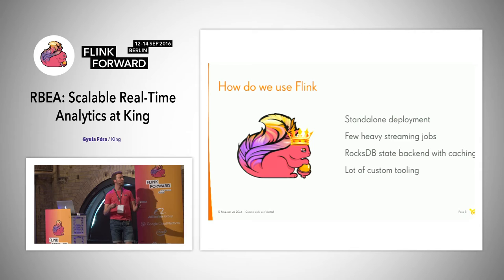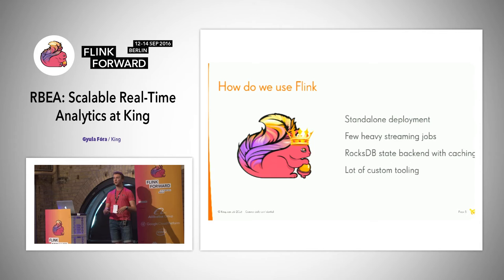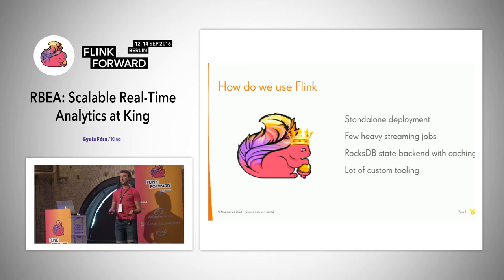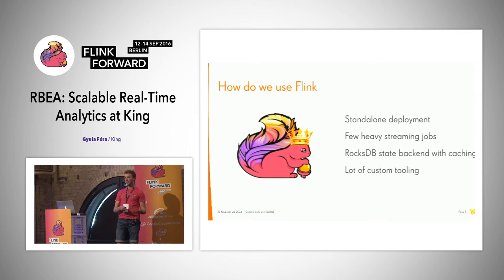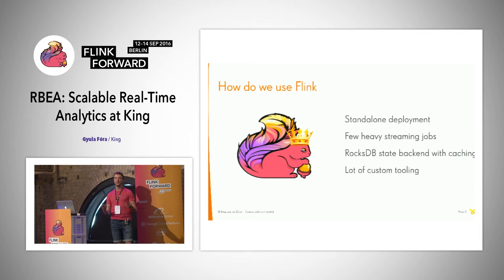Let's look at how we actually use Flink inside the company. We have a standalone Flink cluster. Instead of deploying many Flink streaming jobs, we actually run a few heavier, complex streaming jobs. For almost all of these, we use the RocksDB state backend, and we actually built a custom Java caching layer on top of this, because it's very common that there is a small set of keys that are very active for a short period of time — someone plays for 20 minutes on the bus and might not play again for the next couple of hours. Of course, we also have a lot of custom tooling around Flink, mostly operational features handling checkpoints and savepoints, to make Flink production-ready for our needs.